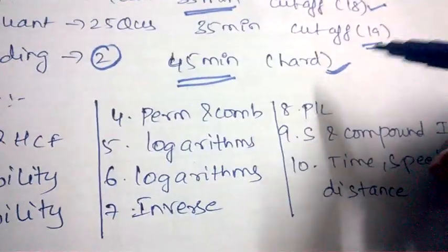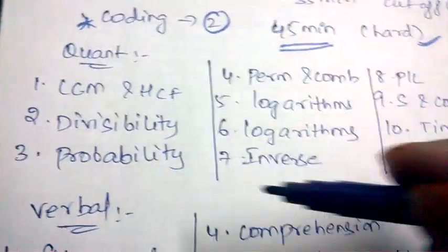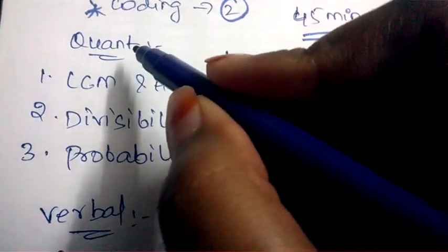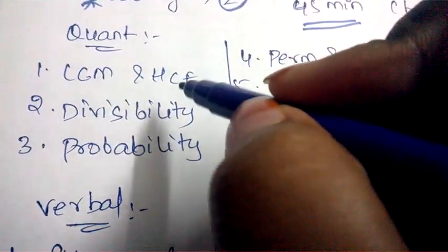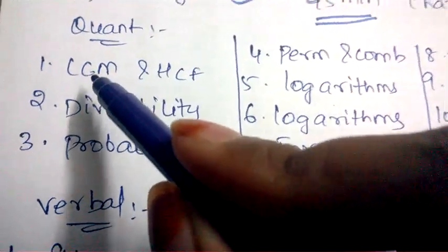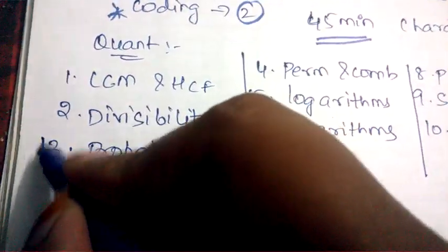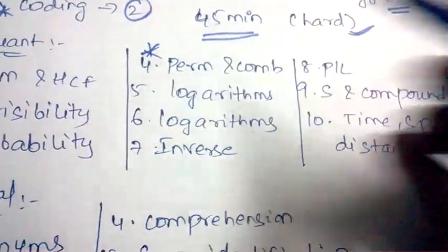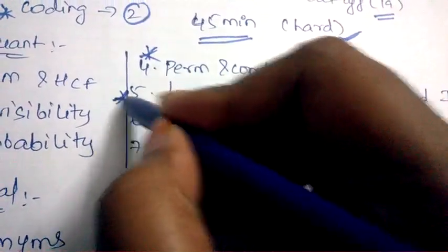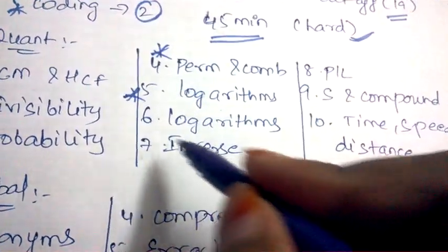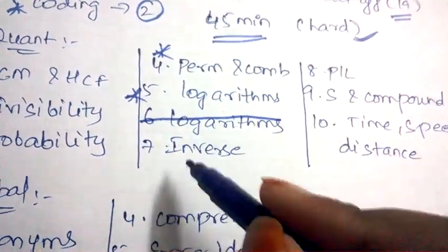Let's see the portion of quantitative aptitude. In quantitative aptitude, the questions will be asked from LCM and HCF, divisibility, probability (probability is important), permutation and combination (important), logarithms (important).